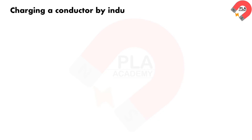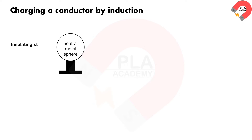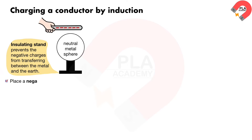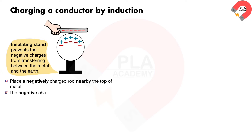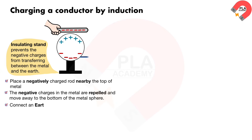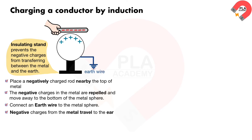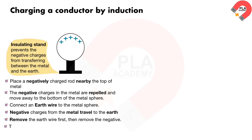Charging a conductor by induction. Starting with a neutral metal sphere on an insulating stand, which prevents negative charges from transferring between the metal and the earth. A negatively charged rod is placed nearby the top of the metal. The negative charges in the metal are repelled and move away to the bottom of the sphere. An earth wire is connected to the metal sphere, allowing negative charges to travel to the earth. The earth wire is removed first, then the rod. The metal sphere is left with a positive charge.